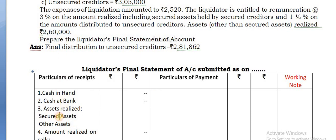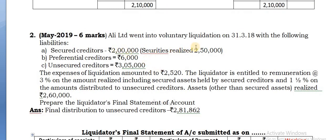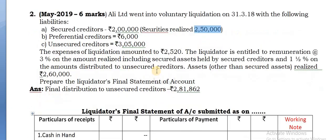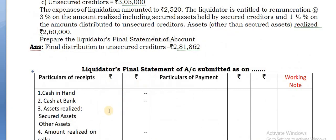The secured assets are realizing at 2,50,000 - okay, be careful with that.